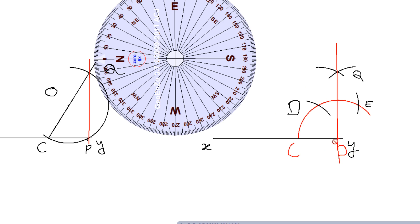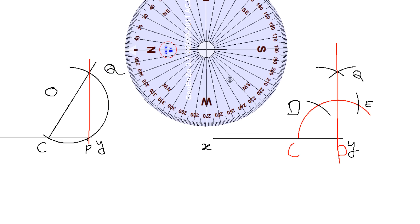What I did: I took P as the center, took any radius, and drew an arc on the larger side cutting line XY at point C. Making C the center with the same radius, I cut the previously drawn arc at two points D and E. Making D and E as centers, I drew two arcs on the same side intersecting at point Q. Connecting PQ gives the required perpendicular. I have discussed two methods to draw a perpendicular when the given point is very close to — or even at — the end of a line XY.